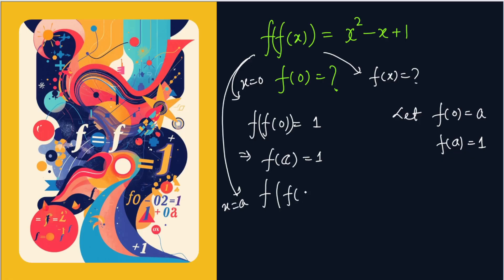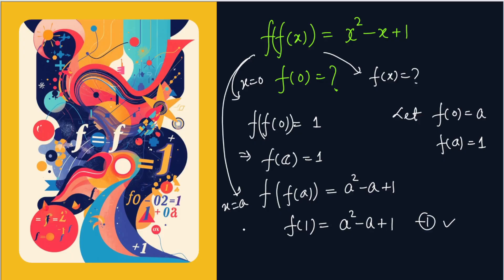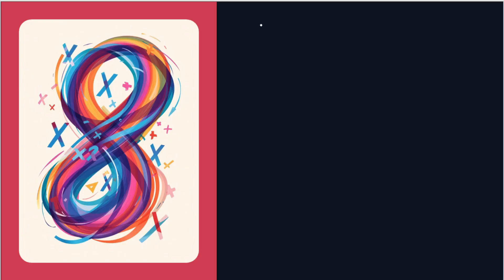Now put x equal to A in our equation. F(A) will be A² - A + 1. But F(A) is 1, so technically F(1) = A² - A + 1. Let's remember that. Now in the same composite function, put x equal to 1.